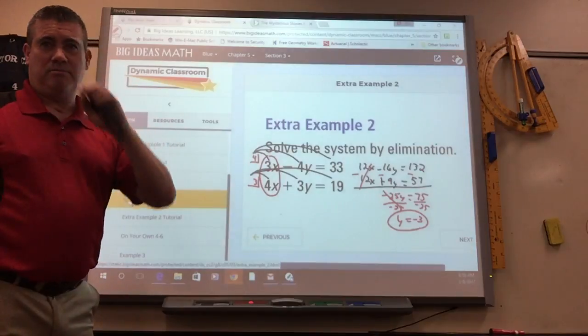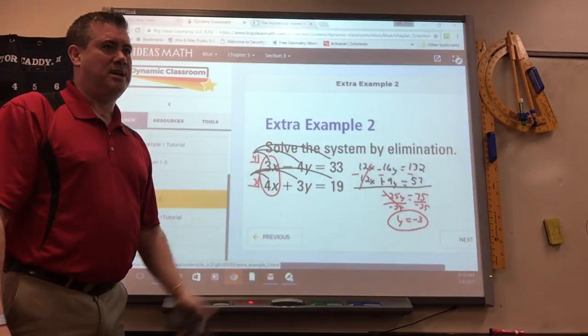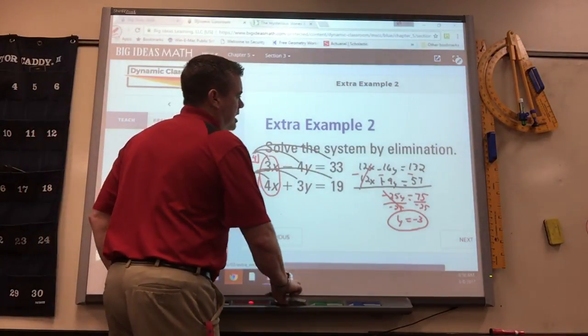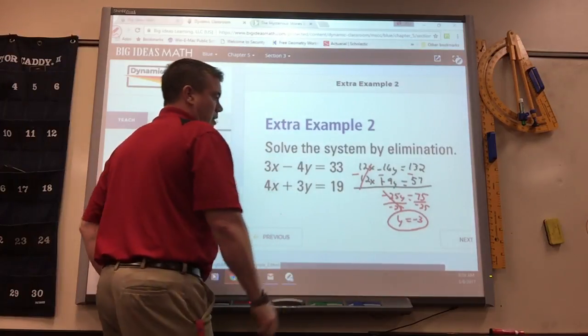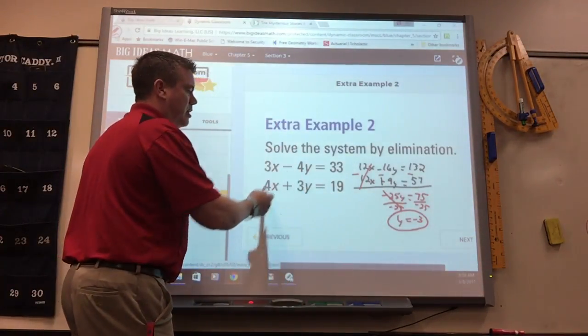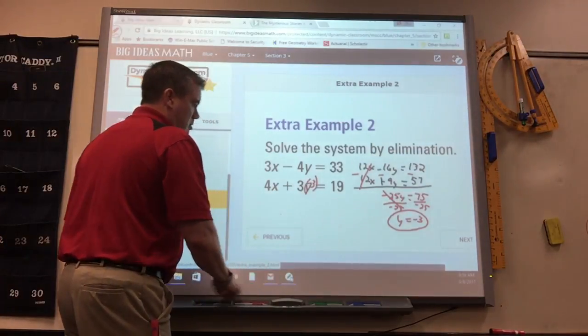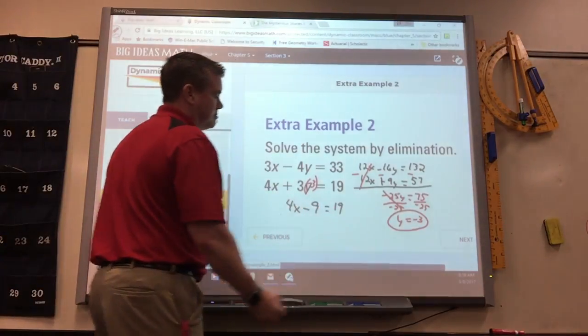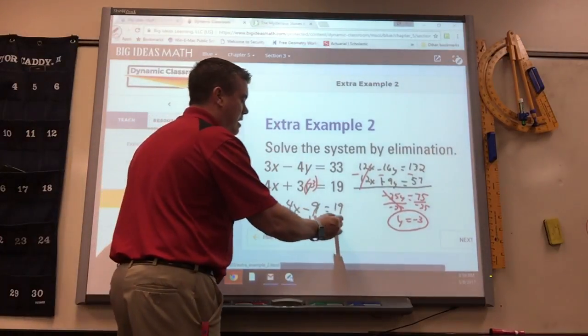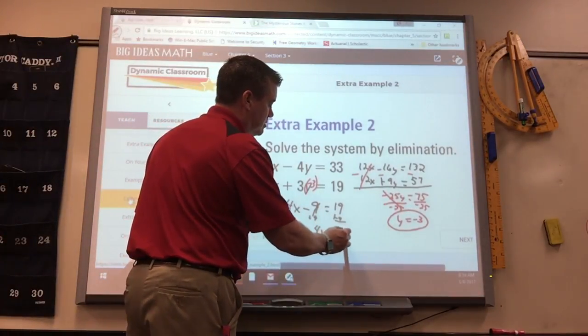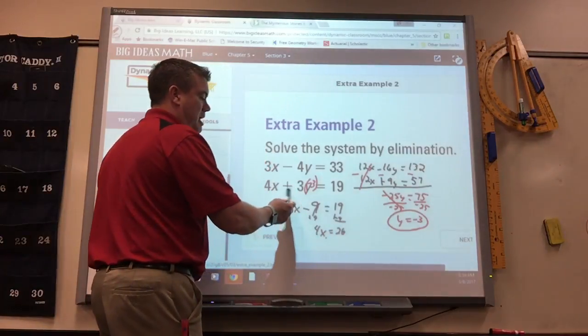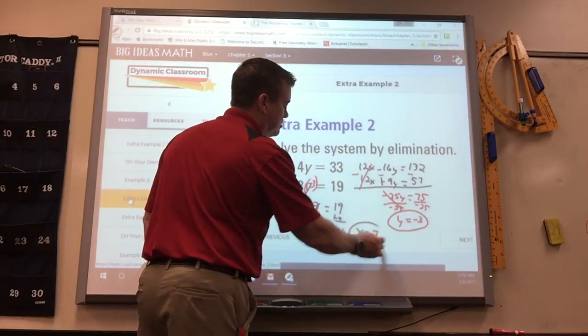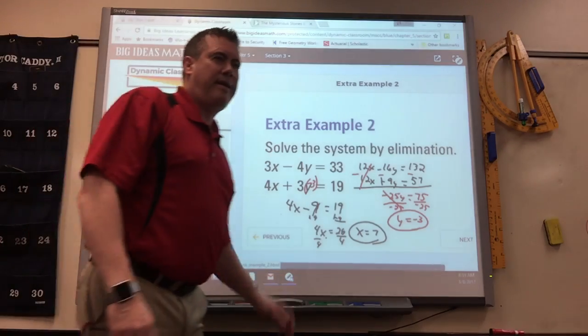It really isn't that much longer when you start understanding it. It just takes a while because I've got to explain everything. So you plug negative 3 in either here or here. It doesn't matter. Rewrite the equation. So it would be 4x minus 9 equals 19. And you solve it. Add 9. It wasn't minus 4 because it's negative 9. Positive 3 times negative 3. Divide by 4 and you get x equals 7.